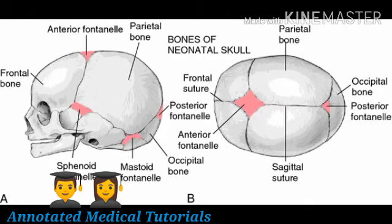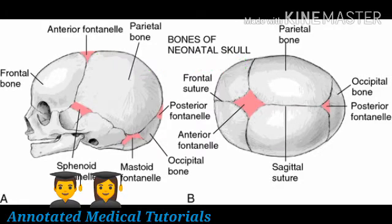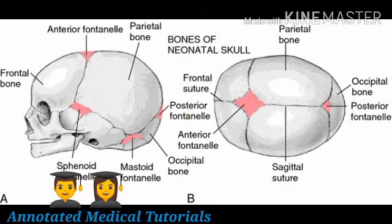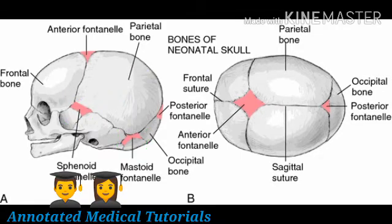The neonatal skull has a total of six fontanels. In addition to the anterior and posterior fontanels, there is the sphenoid fontanel and the mastoid fontanel. The sphenoid and mastoid fontanels are paired, meaning there are two on each side.